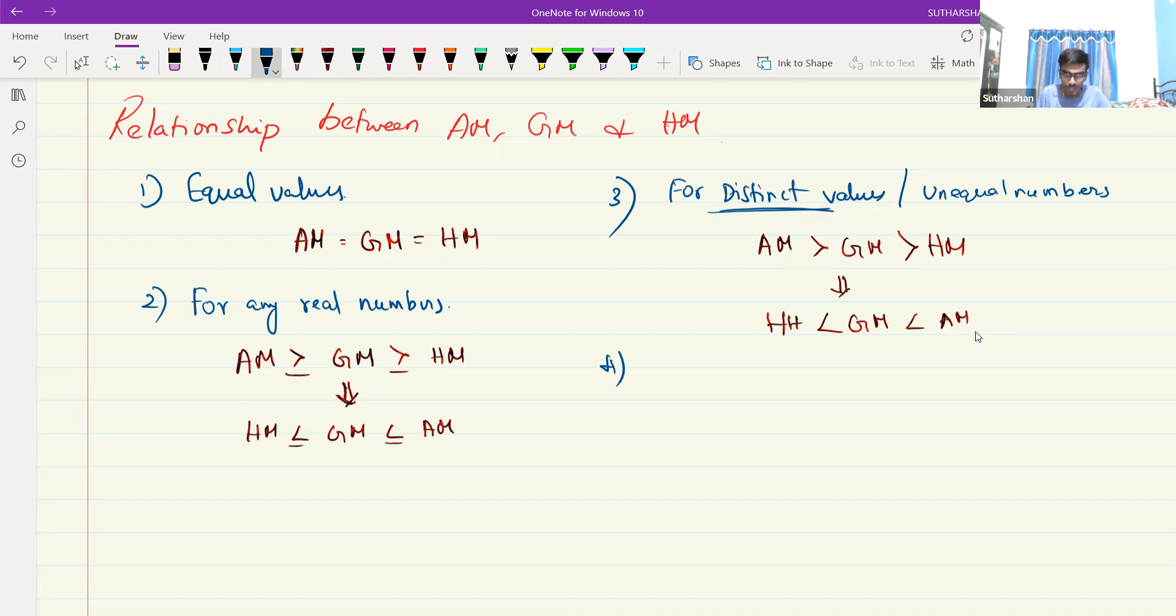Finally, we have for, suppose they are given the GM, they are asking the GM square value. They are given with the information of AM and HM. You just need to multiply it. Multiply it and you will get the GM value. Suppose it is given to you, GM square is equal to AM into HM. So GM is equal to AM into HM, square root of AM into HM.